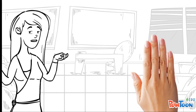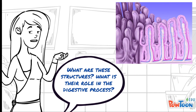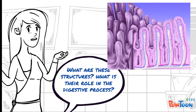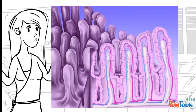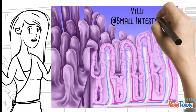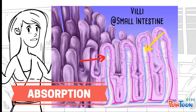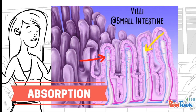Next question: what are the structures shown in this picture, and what are their roles in the digestive process? These are villi present in the small intestine, responsible for absorption. Glucose and amino acids are absorbed through the capillaries, while fatty acids are absorbed through the lacteal. Together with the large number of villi providing a large surface area and their one-cell thick wall, they make the whole absorption process quick and efficient.